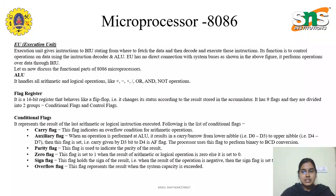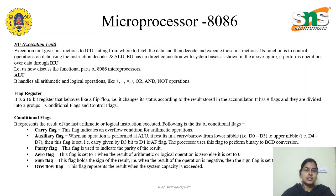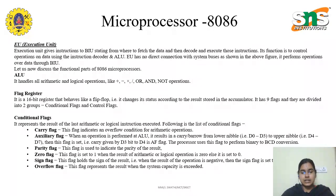Previously we discussed the 8085 microprocessor — its architecture, interrupts, and pin configuration. Now we are going to discuss the 8086 microprocessor, which is a little more advanced than the 8085. As we know, the 8085 is an 8-bit microprocessor whereas the 8086 is a 16-bit microprocessor, so the registers used here are completely 16-bit registers. We will now discuss the architecture of 8086.